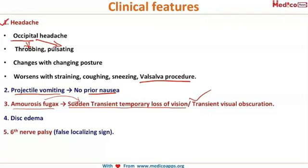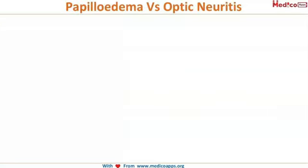Additionally, sixth nerve palsy is seen in papilledema — it is a false localizing sign. To revise, the clinical features are: occipital throbbing headache worsened by Valsalva and posture change, projectile vomiting, amaurosis fugax, disc edema, and sixth nerve palsy. Since papilledema resembles optic neuritis, we need to know how to differentiate the two.